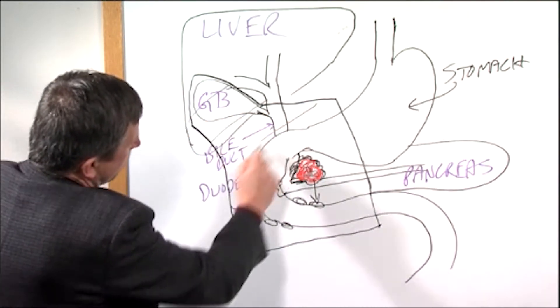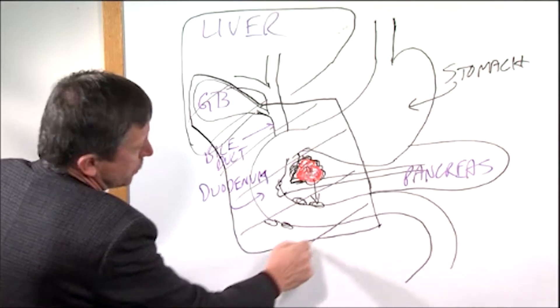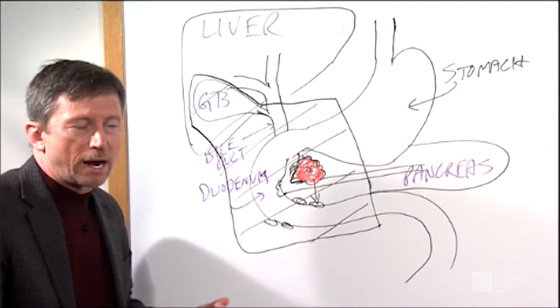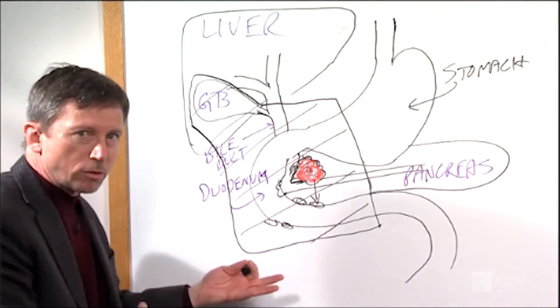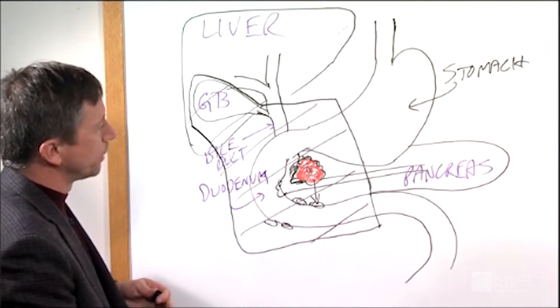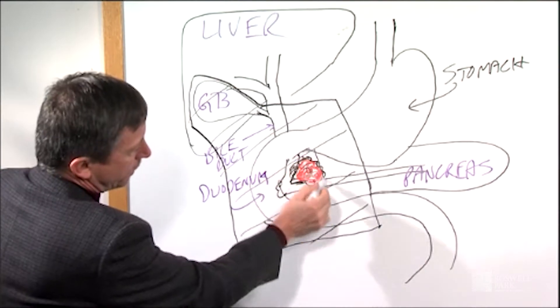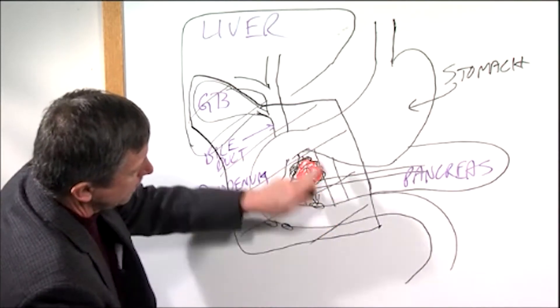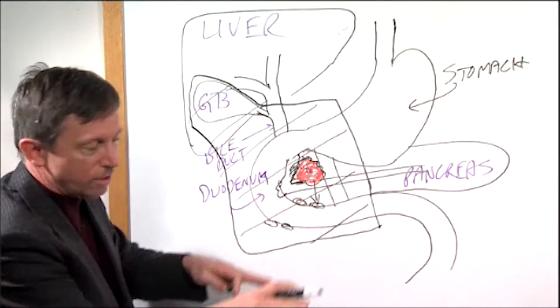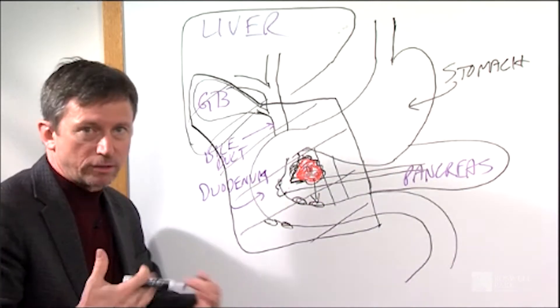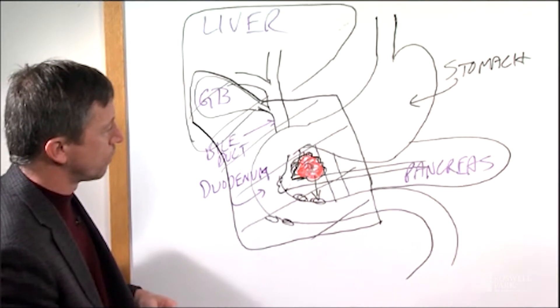This part of the surgery generally takes about three or four hours. It can be shorter if it's simpler, but it can also be more complicated if the tumor involves some of the major blood vessels that run behind the head of the pancreas, and we'll talk about that in more detail if your particular situation warrants that.